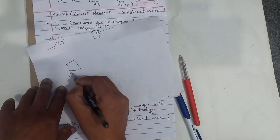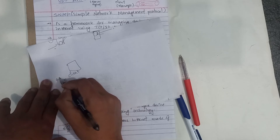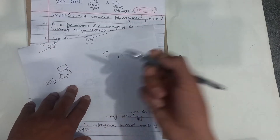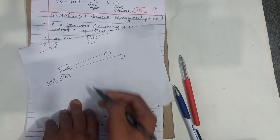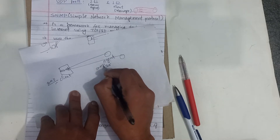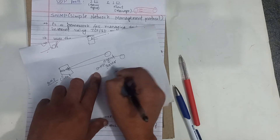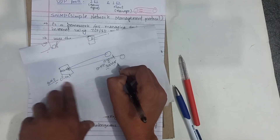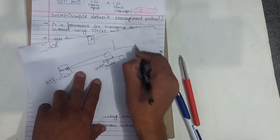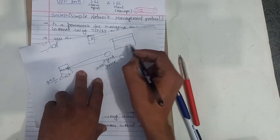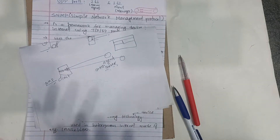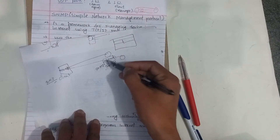We have an SNMP client, we have a manager, we have a router or a device, we have an agent, and we have an SNMP server. On the SNMP server there are variables, values, and a database — different variables representing the agent's performance.